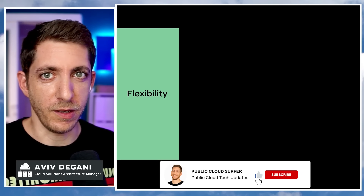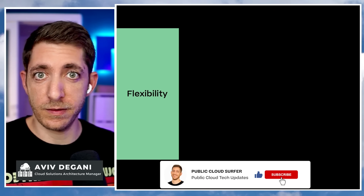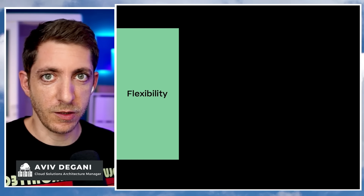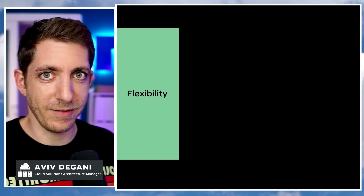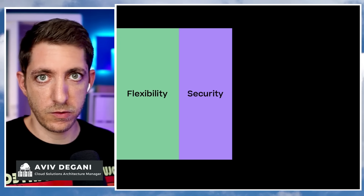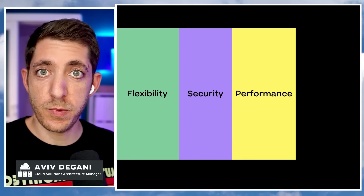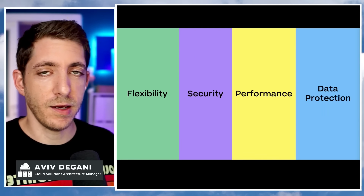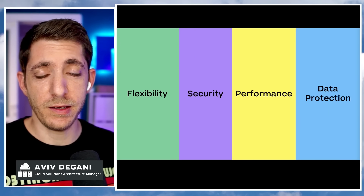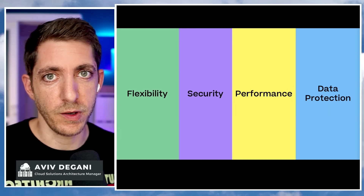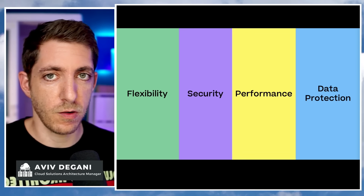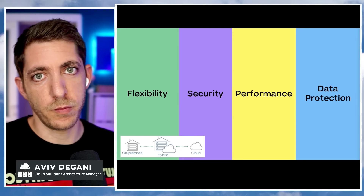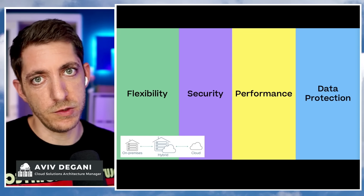How flexible ONTAP can be on the deployment and accessing the data — and we have a new multi-protocol access here. It's also including how resilient and how highly available your data is. We have a category on security, new performance capabilities both for on-premise and for the cloud, and really amazing new features baked into the ONTAP OS around data protection. I'll also add an indication for each slide if it can run on-premise, in a hybrid environment, or just in the cloud.